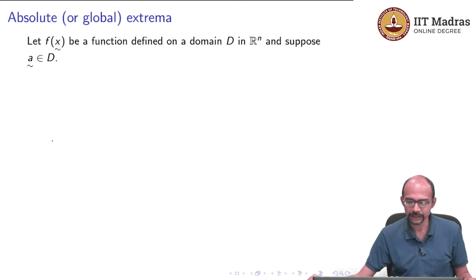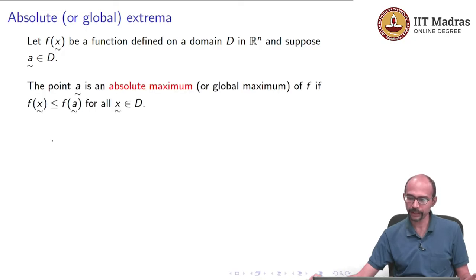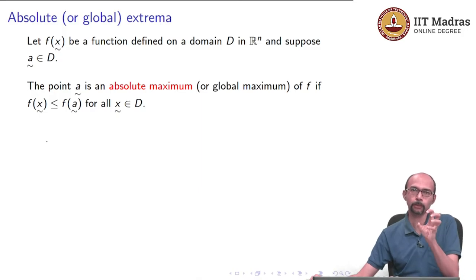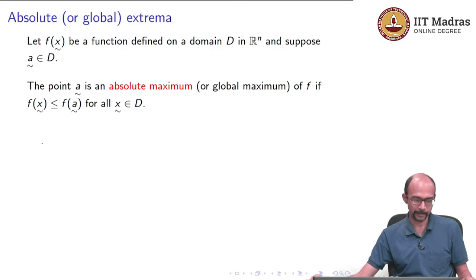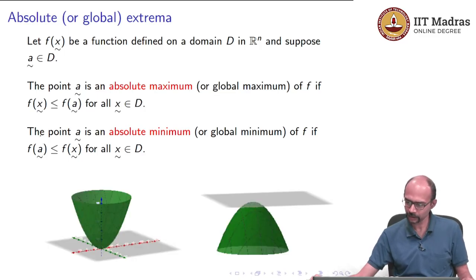The final topic in this video is the notion of absolute or global extrema. Suppose we have a function defined in a domain D in Rⁿ and a point A in D. The point A is an absolute (global) maximum if f(A) ≥ f(x) for all x in D — not just on a small ball, but across the entire domain. Similarly, for an absolute (global) minimum, f(A) is the smallest value among all points in the domain.